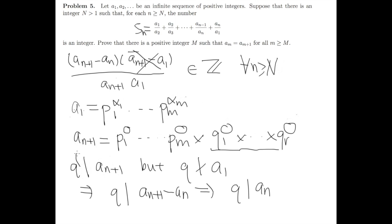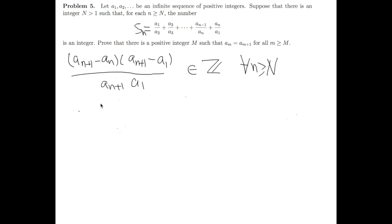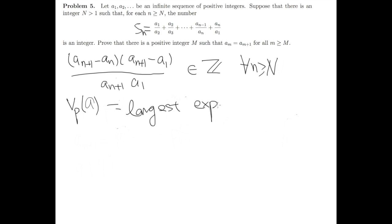The nice thing is that we can do this in terms of powers. If Q^beta divides a_{n+1}, then necessarily Q^beta divides a_n. And by recursion, this implies that Q^beta divides a_N for large enough N. So to simplify the presentation, I'll introduce notation: given an integer a and a prime p, I denote v_p(a) as the largest exponent of p which divides a.